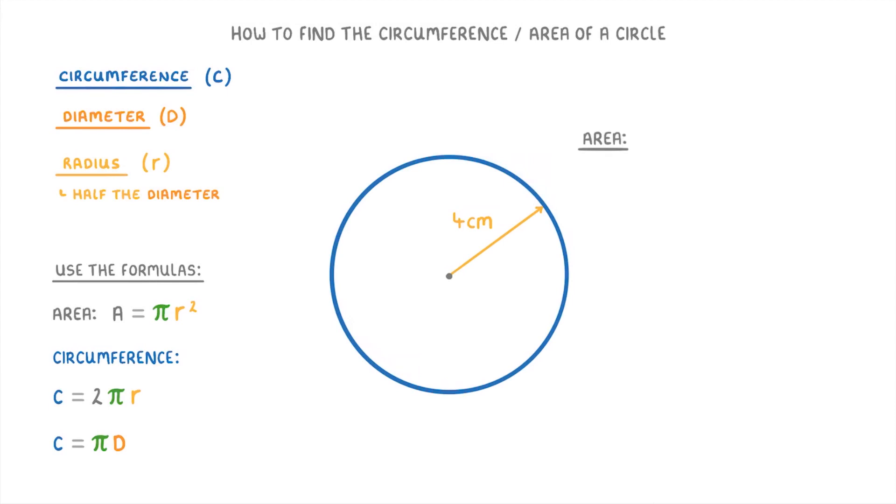So to calculate the area, we just take the equation A equals pi r squared, and plug in the radius of 4. So area equals pi times 4 squared, which is pi times 16.